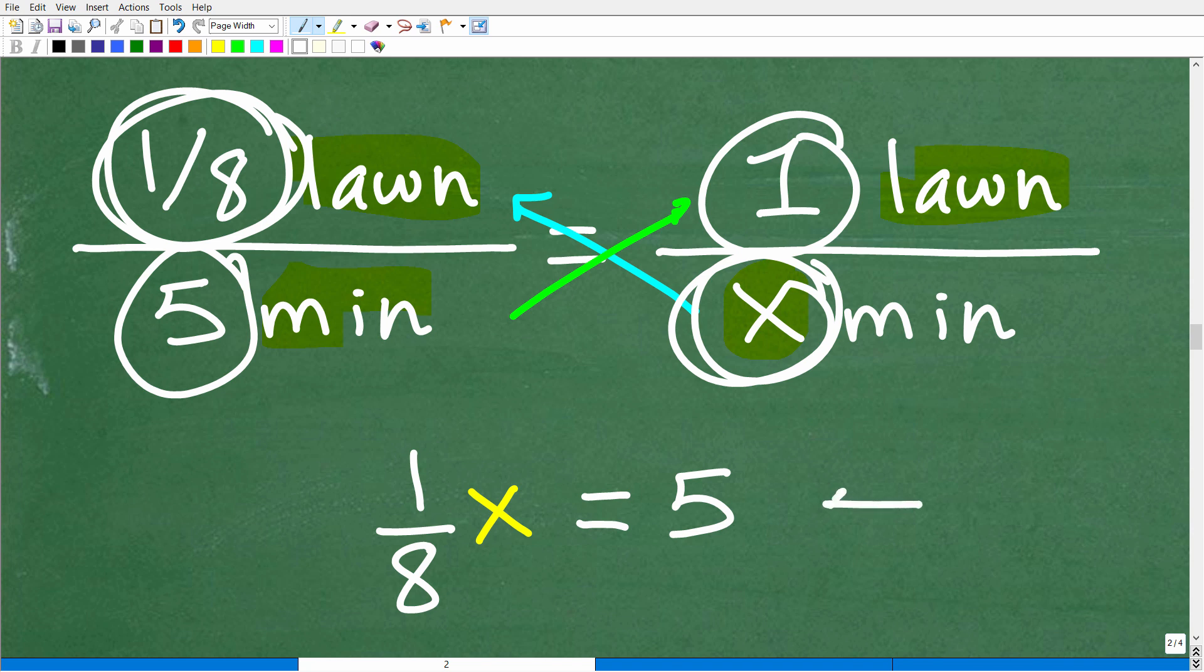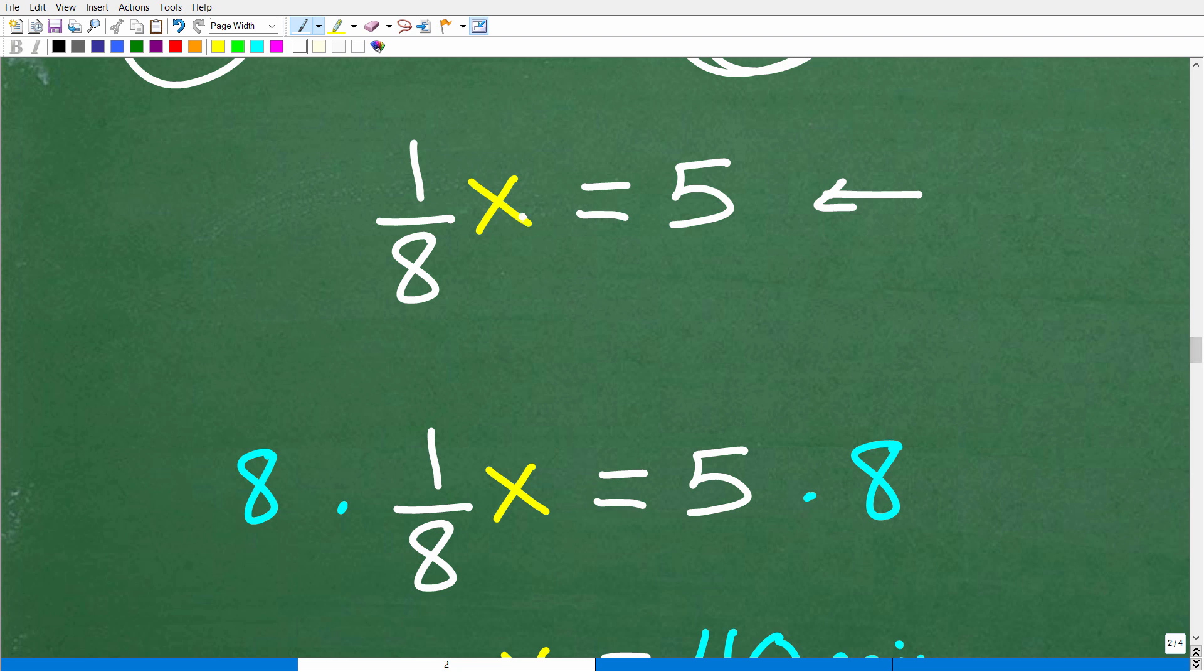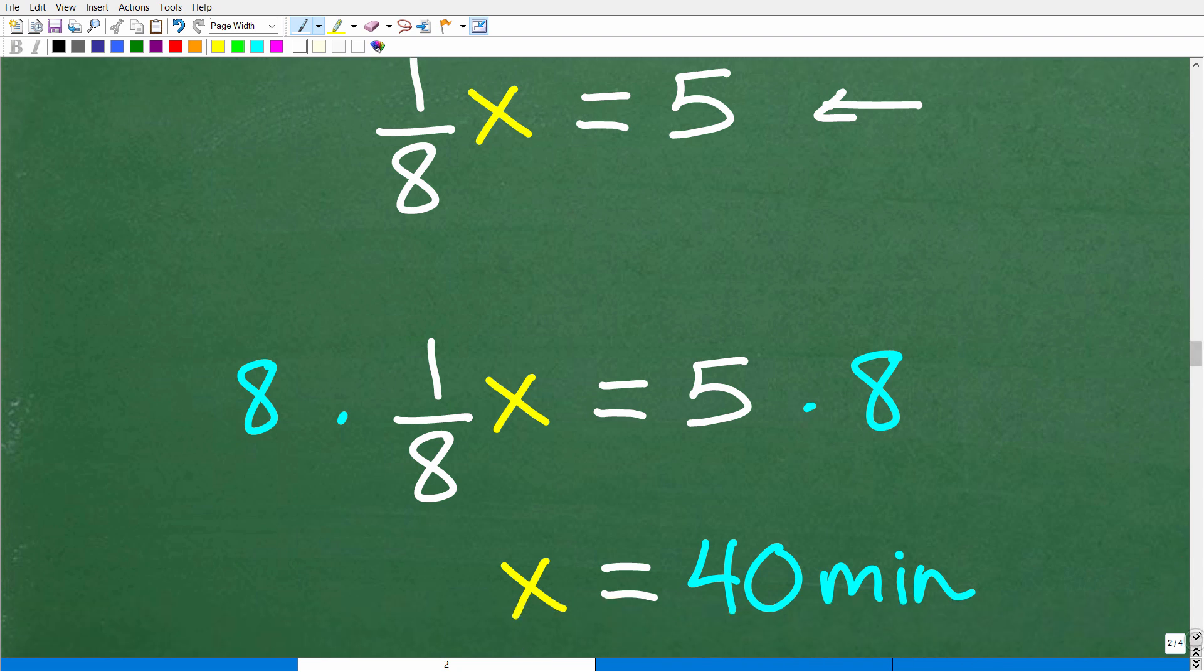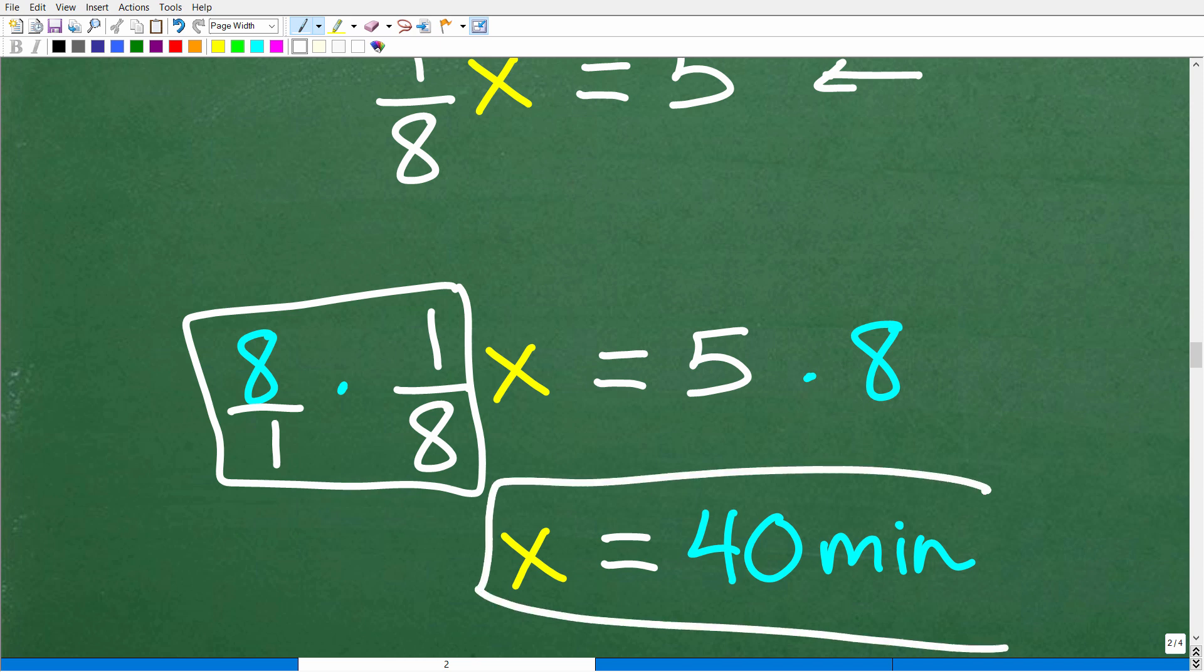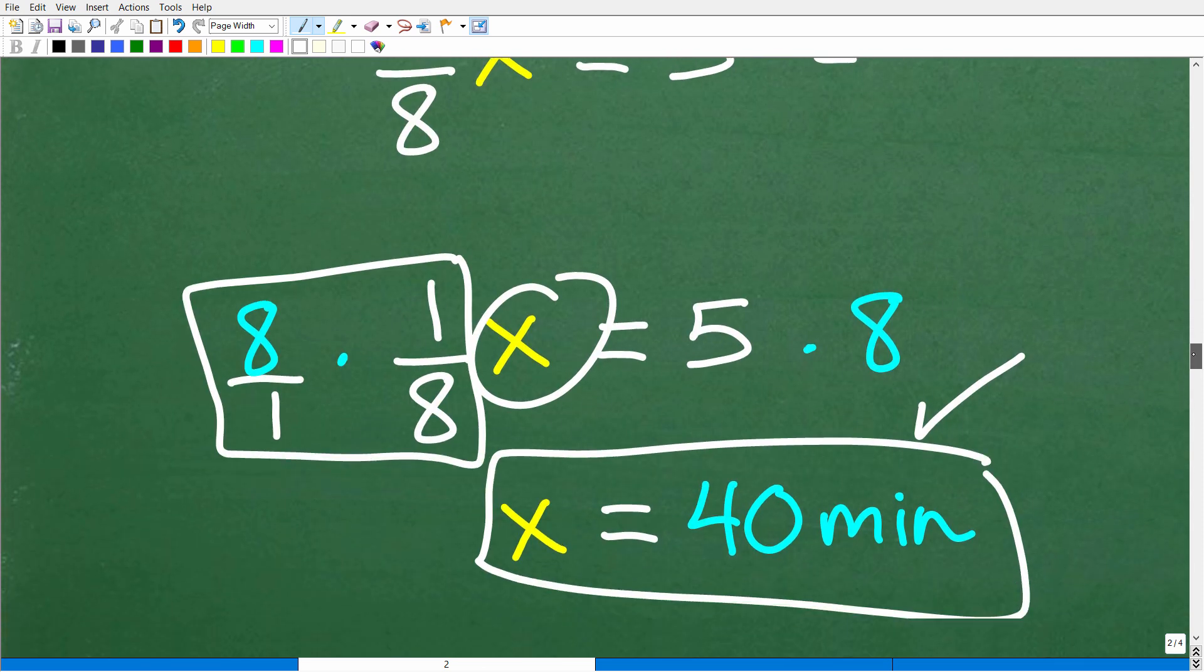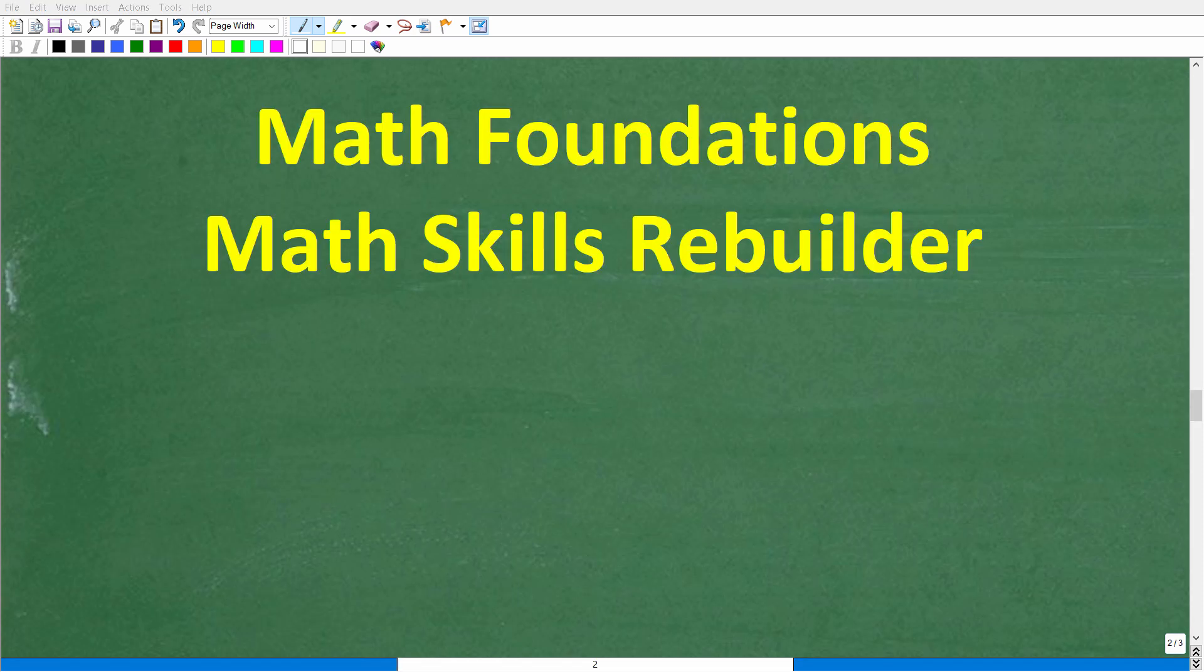So we have one eighth of the lawn times X. We're just going to kind of drop all these units of measure. We just know that X we're solving for this variable X is going to be in minutes. So here we're going to have X times one eighth. In algebra, we can write that as one eighth X. And then five times one is of course five. So all we need to do is solve this basic equation for X. And to solve this equation, all we need to do is multiply both sides of the equation by eight. So eight times one eighth, when we multiply these fractions, we get one X or X and then five times eight, of course is 40. So X is equal to 40 minutes.